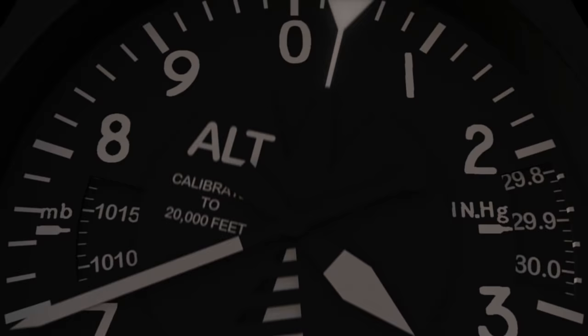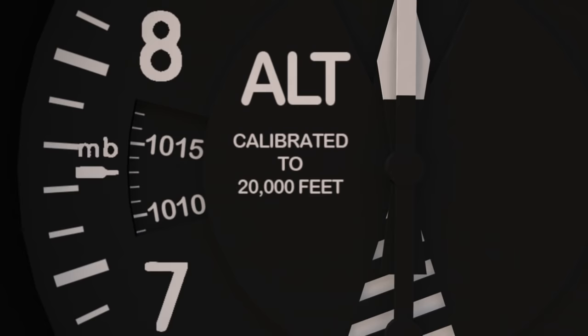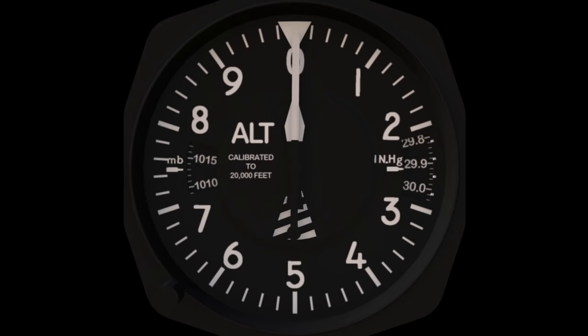The face of the altimeter contains three hands: the 10,000-foot, 1,000-foot, and 100-foot hands. These hands move clockwise and counterclockwise to display the appropriate altitude. Most altimeters in smaller aircraft will only work up to around 20,000 feet, but those airplanes usually can't get that high anyway.